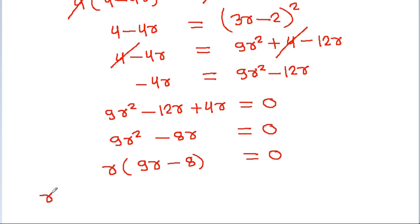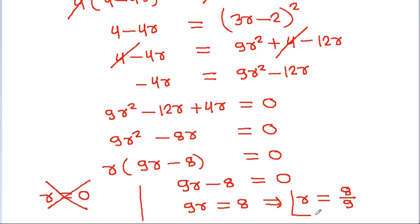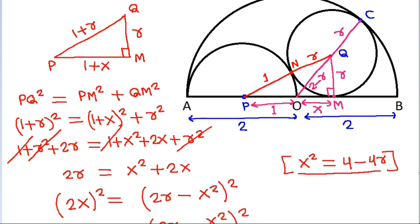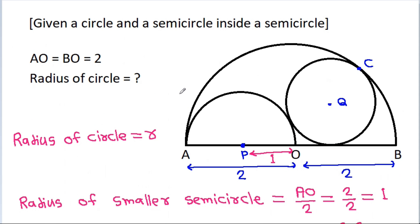So either R equals 0, which is not possible, or 9R minus 8 equals 0. Therefore 9R equals 8, so R equals 8 divided by 9. The radius of the circle is 8/9.